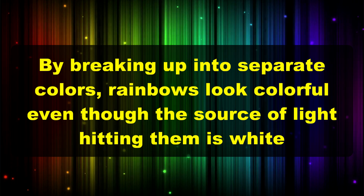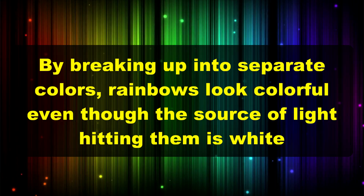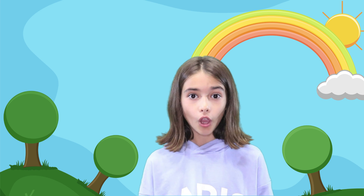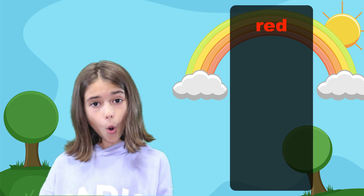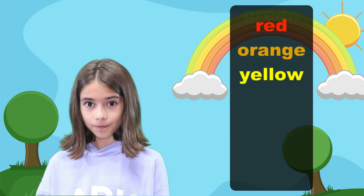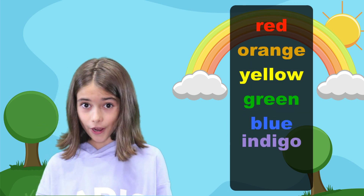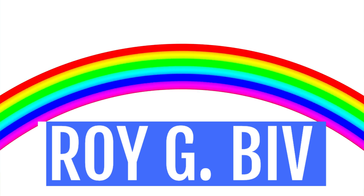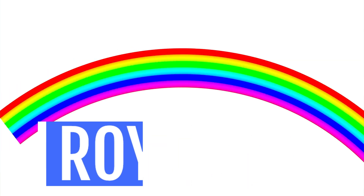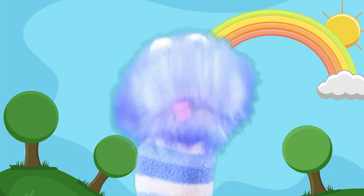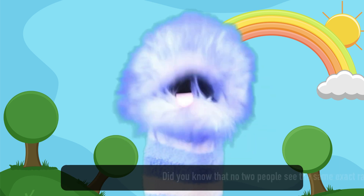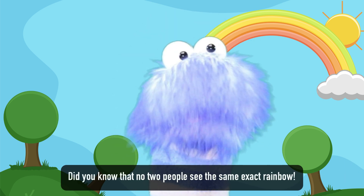By breaking up into separate colors, rainbows look colorful even though the source of light hitting them is white. Rainbows are made up of seven colors: red, orange, yellow, green, blue, indigo, and violet. An easy way to remember these colors is to think of the name Roy G. Biv — that's a rainbow's best friend!